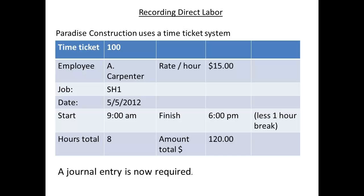To record direct labour, a time card is used. Employees will record the time spent on each job separately, so that the time card detail, when entered to accounting software, will allocate the cost to the job.